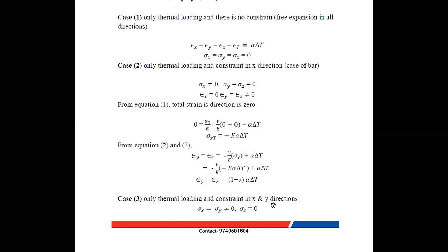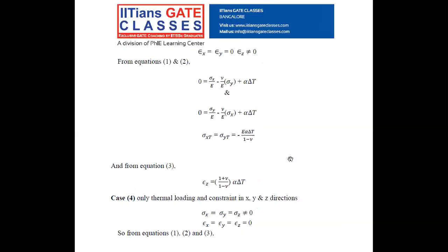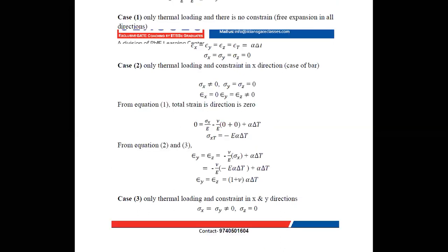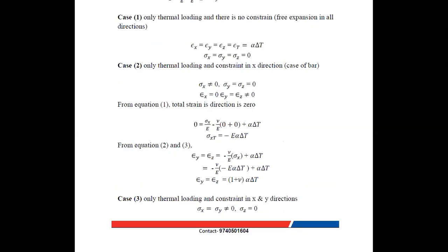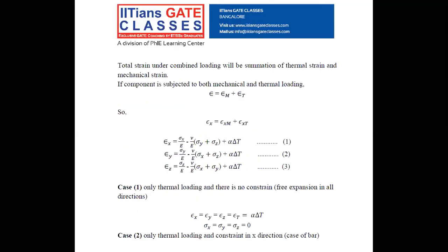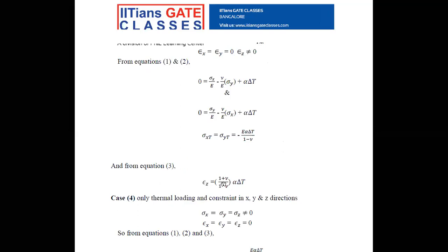Case 3: only thermal loading with constraint in both x and y directions. Here sigma x and sigma y are non-zero, while sigma z is zero. Total strains epsilon x and epsilon y are zero. Using Equations 1 and 2, we find sigma x = sigma y = −E·alpha·ΔT / (1 − nu). Substituting these into Equation 3 gives epsilon z = [(1 + nu) / (1 − nu)] · alpha·ΔT.